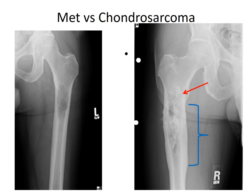It's important to remember that this is the same age category, so this is a common consideration — comparing a primary bone sarcoma or primary bone tumor on the right with a secondary or metastatic bone lesion such as the lesion on the left.